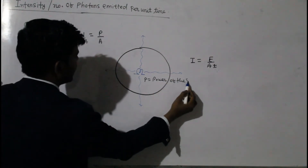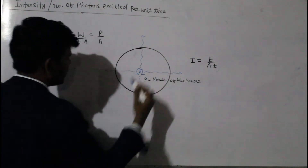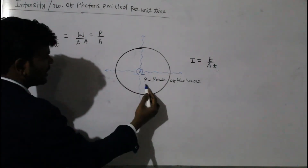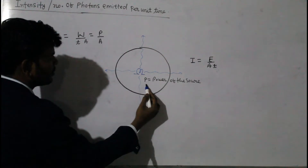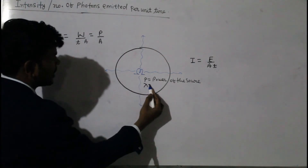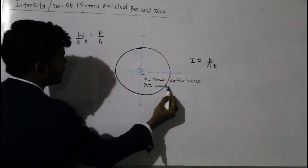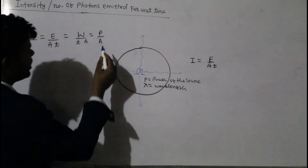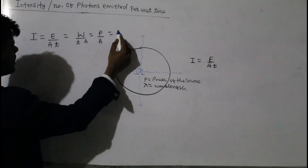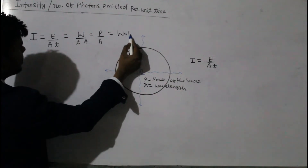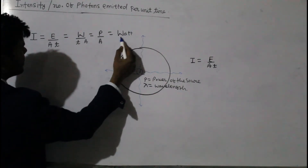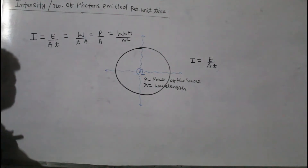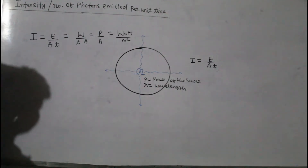We take P as the power of the source, and suppose the wavelength of the radiation emitted from this source is lambda. The SI unit of power is watt, and the SI unit of area is meter square, so the SI unit of intensity is watt per meter square.